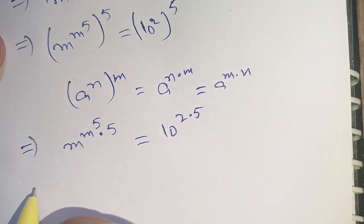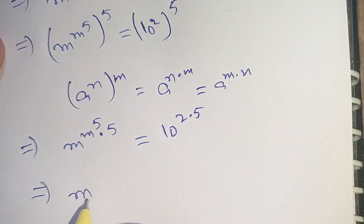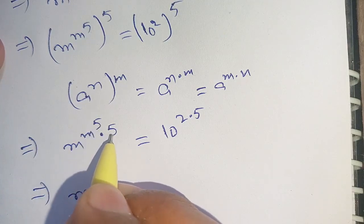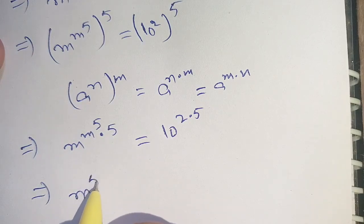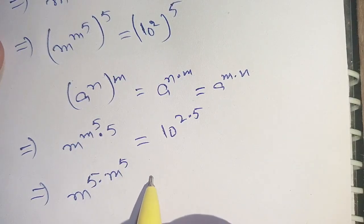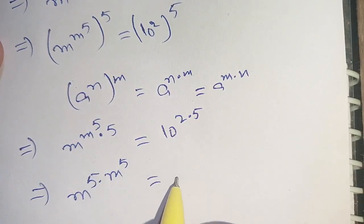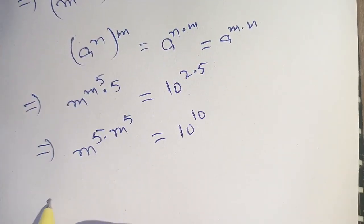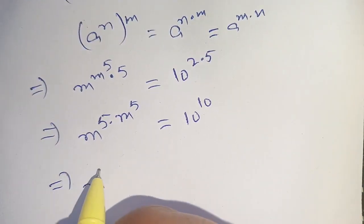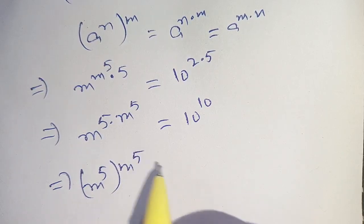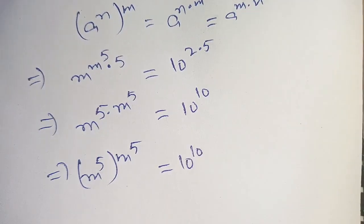On the next step we can write this as m raised to the power 5 times m raised to the power 5 is equal to 10 raised to the power 10. This can also be written as m raised to the power 5, m raised to the power 5 is equal to 10 raised to the power 10.